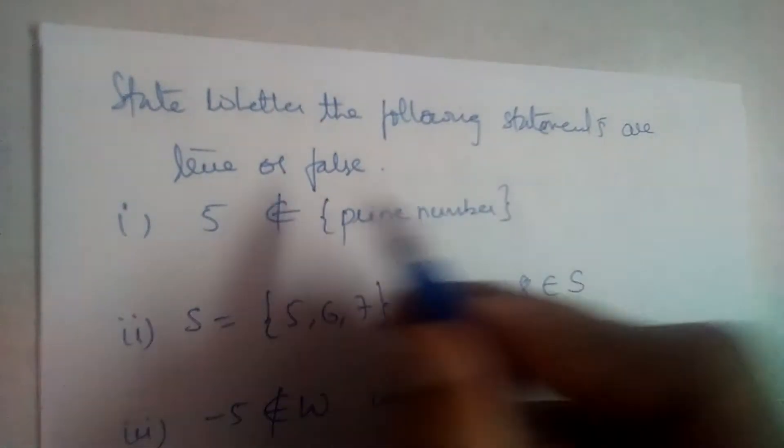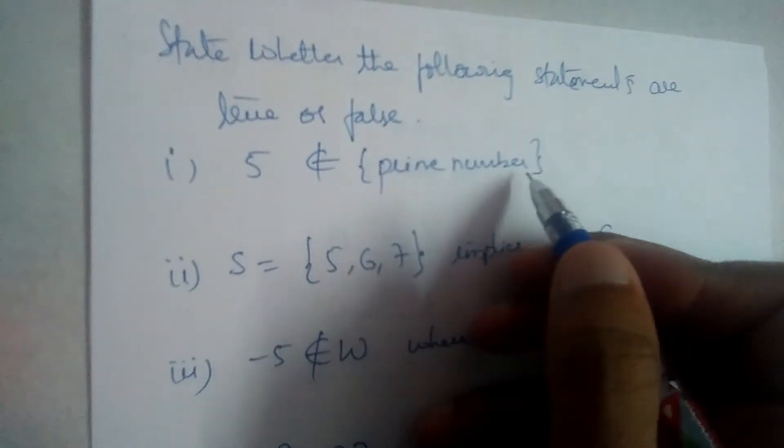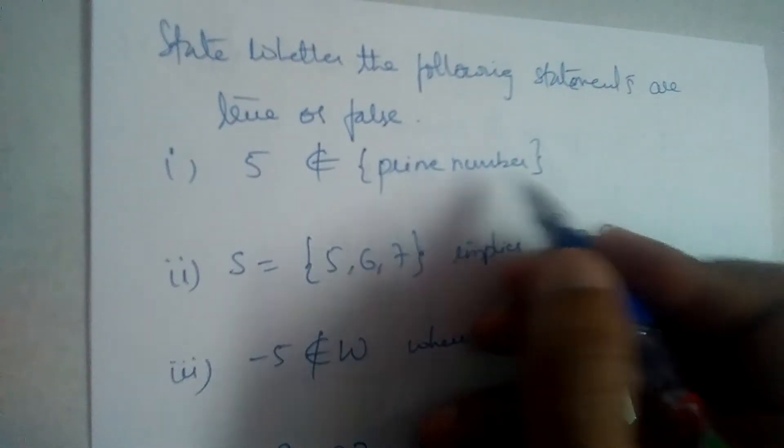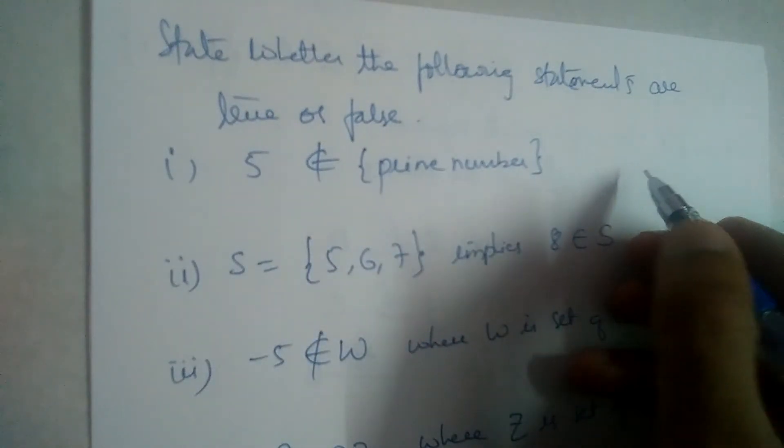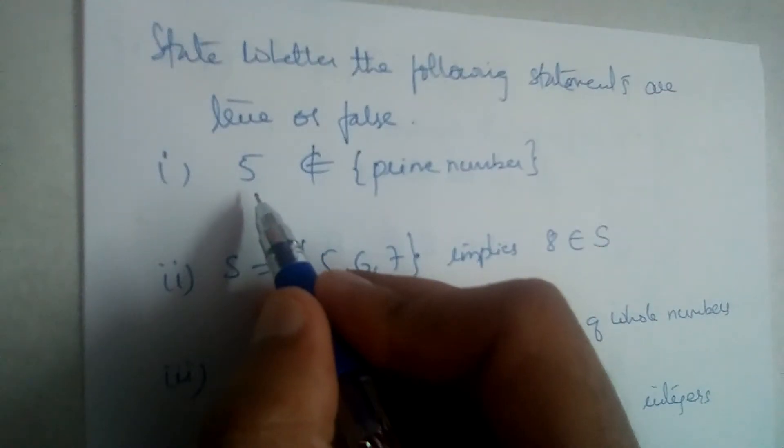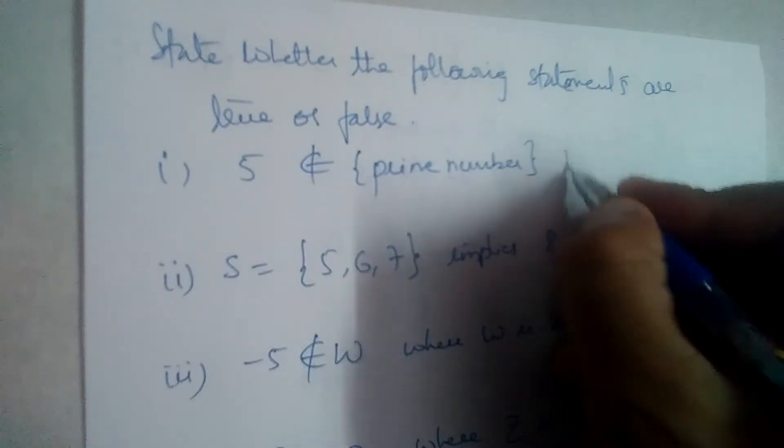State whether the following statements are true or false. First one: 5 does not belong to prime number. Is it true or false? See, 5 is a prime number, isn't it?